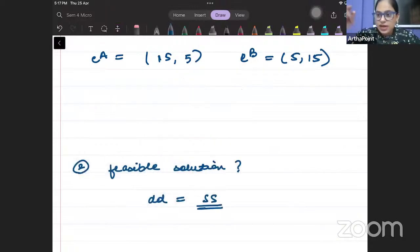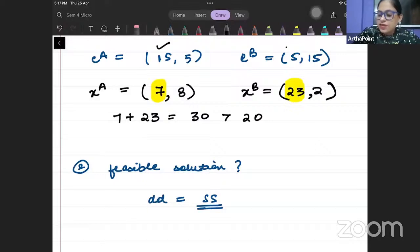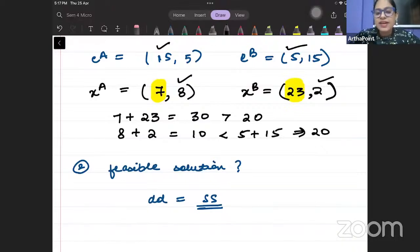So feasible solution is the solution such that the demand is exactly equal to supply. For example, if I take the example up and I tell you that individual A is consuming the bundle 7,8 and individual B is consuming the bundle 23,2. So this is not feasible, because here the total consumption of good one is 30. 7 plus 23 means 30, which is greater than the supply 15 plus 5. And if you look here, if I add good two, 10 is less than 5 plus 15, that means 20. So market is not clearing. Either there is excess demand or excess supply. So when market does not clear, that is also when you will say that it is not a feasible solution. So one question is feasibility.